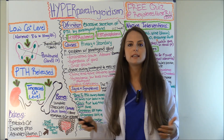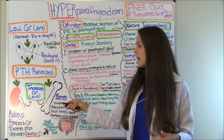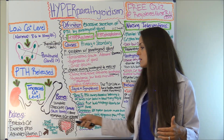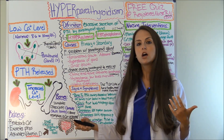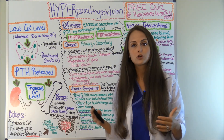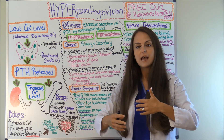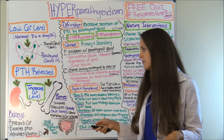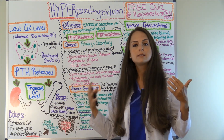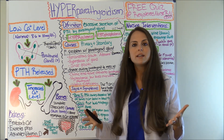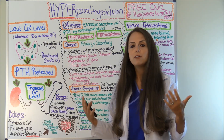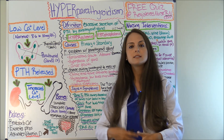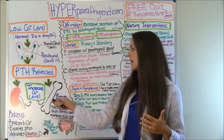PTH acts on the kidneys and the bones. When the kidneys sense PTH being released, they reabsorb calcium — increasing calcium levels — but they also excrete phosphate. So if you have a lot of parathyroid hormone being secreted, you're going to have a lot of calcium being absorbed and lots of phosphate being excreted, which is why you get hypercalcemia and hypophosphatemia. PTH also activates vitamin D, which causes the small intestine to absorb more calcium from food, increasing calcium levels even more.